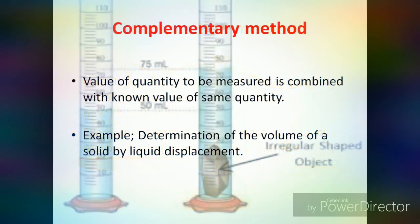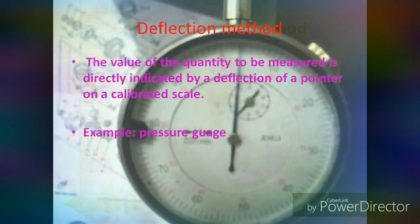Next is the Complementary Method. In this method, the value of the quantity to be measured is combined with the known value of the same quantity. The combination is so adjusted that the sum of these two values is equal to the predetermined comparison value. For example: determination of the volume of a solid by liquid displacement.